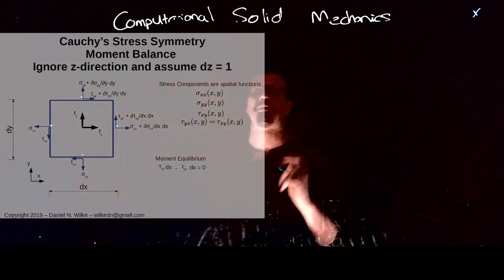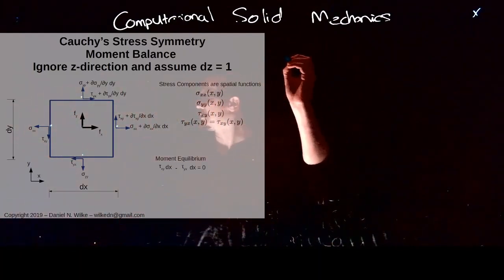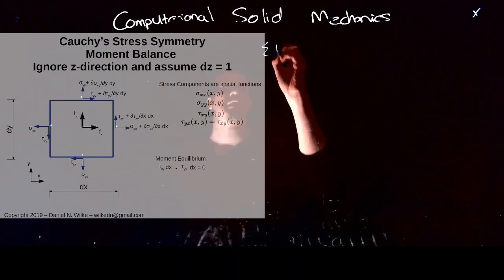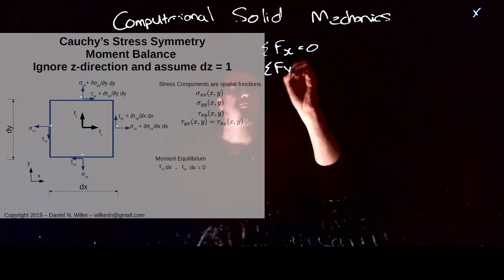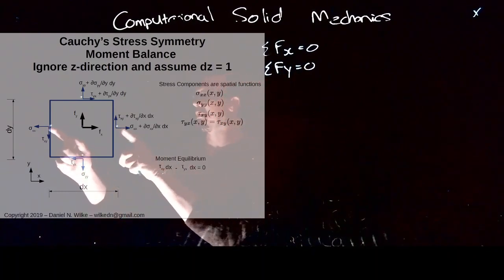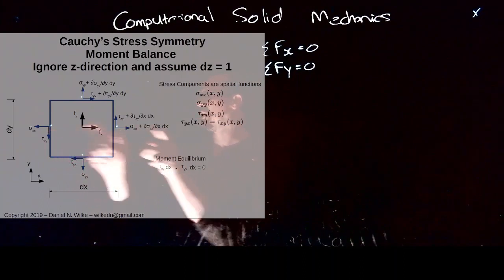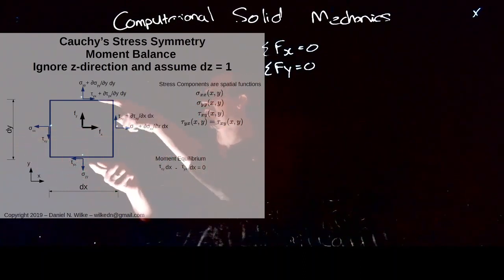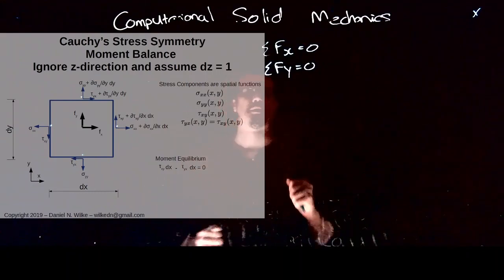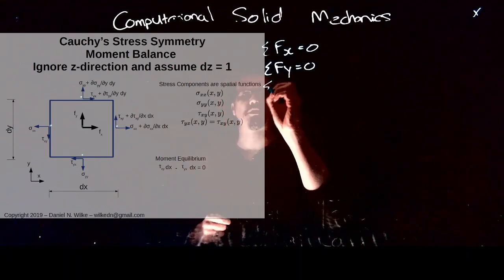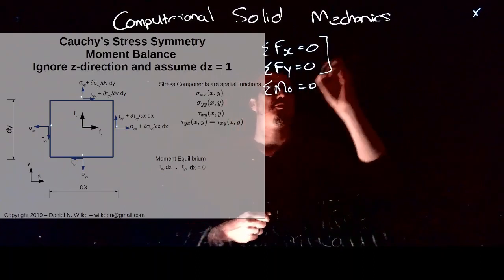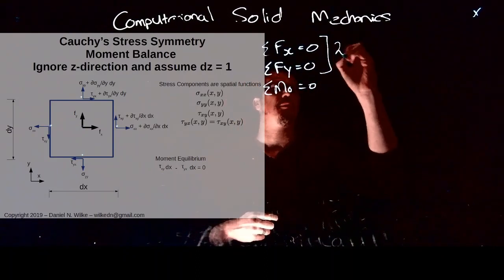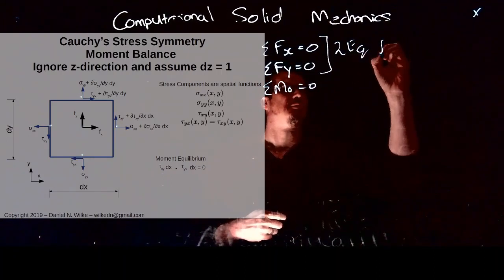What we've looked at so far is the sum of forces in the x-direction must be equal to zero, and the sum of forces in the y-direction must be equal to zero. This ensures that the little cube is not accelerating in the x-direction and not moving in the y-direction. These two gave us two equilibrium equations for the 2D example.